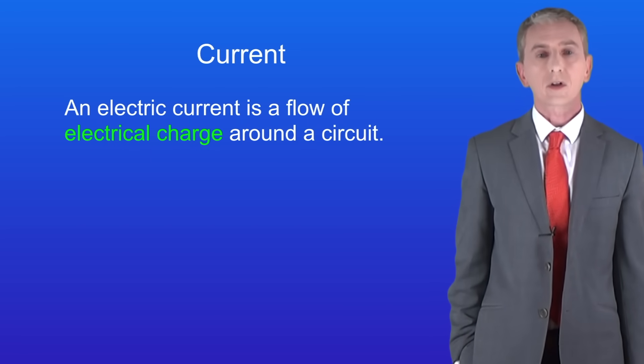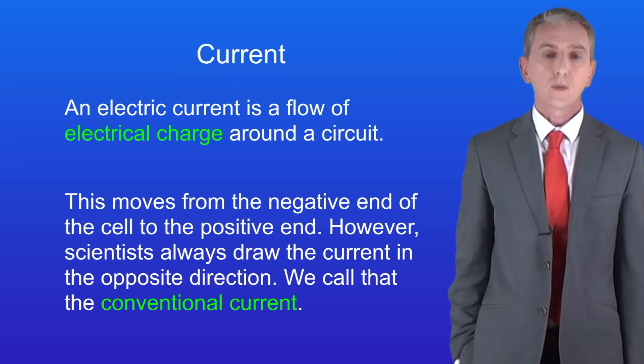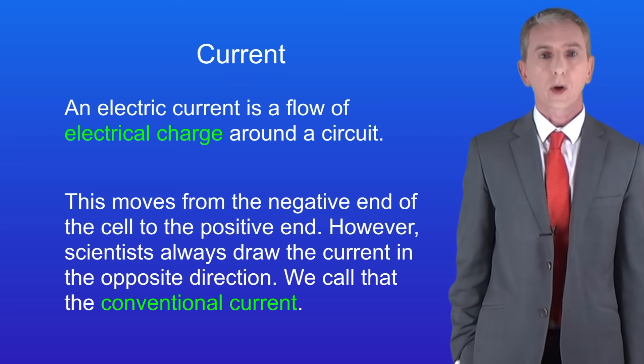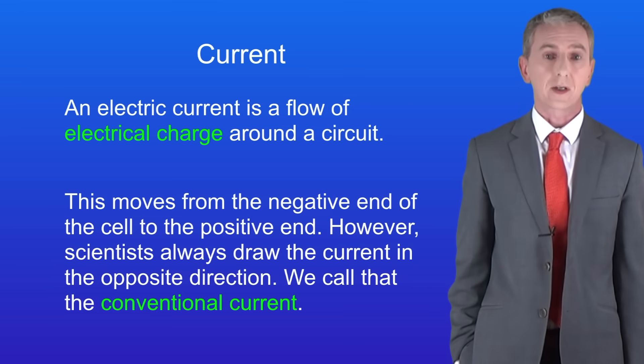In the last video we saw that an electric current is a flow of electrical charge around the circuit. This moves from the negative end of the cell to the positive end. However scientists always draw the current in the opposite direction and we call that the conventional current.